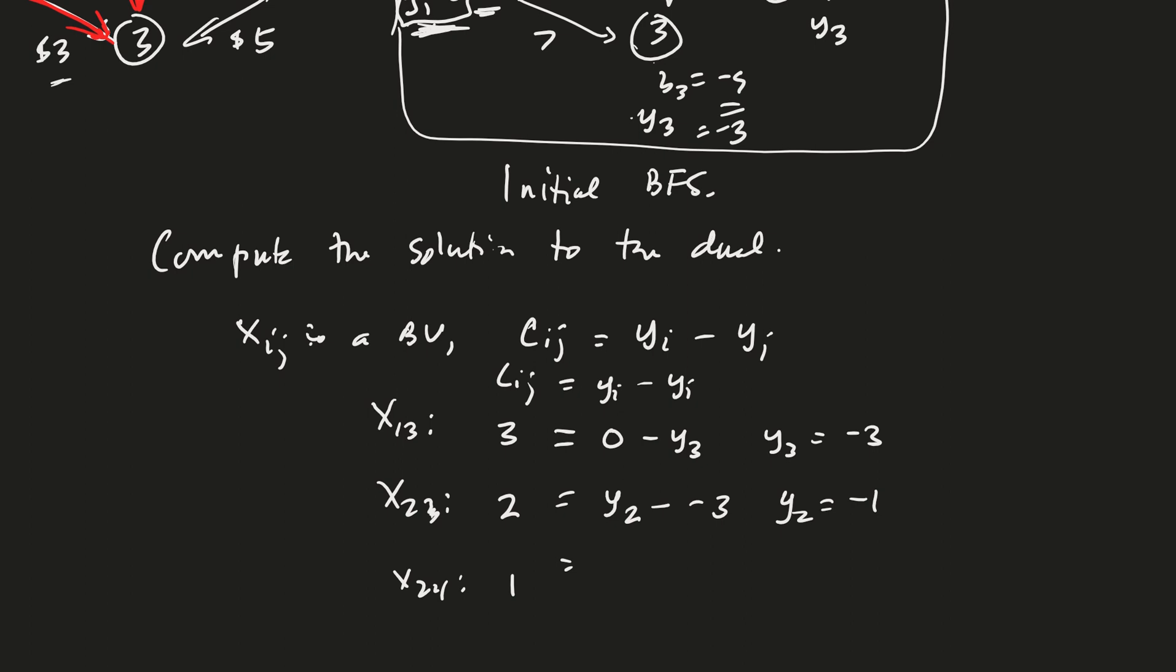And finally, our last one then, Y2, or X2, 4 is going to be Y2 minus Y4. Y2 is minus 1. And so therefore, add 1 to both sides, and Y4 is equal to negative 2, huh? Good.